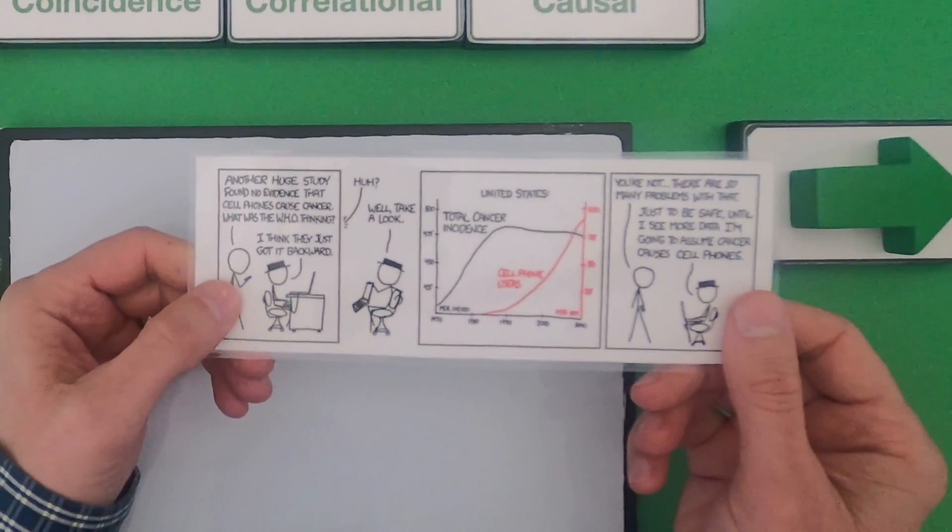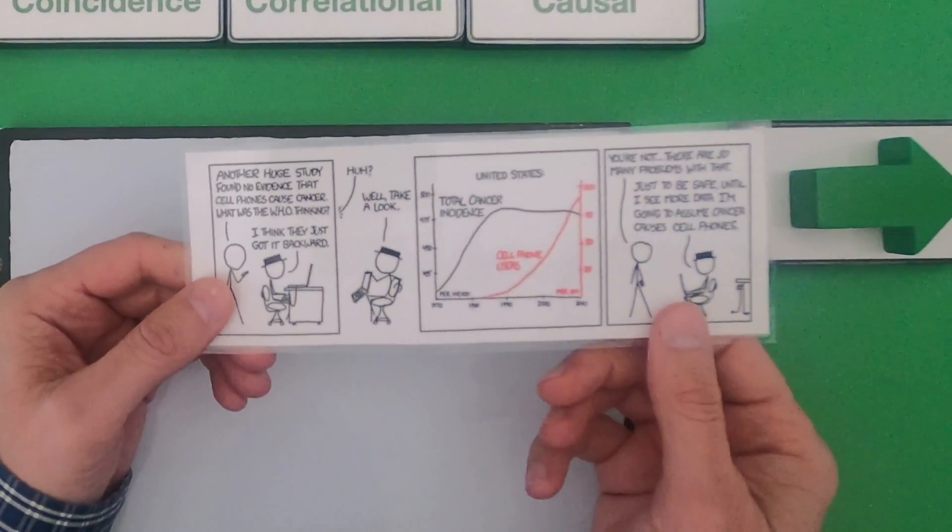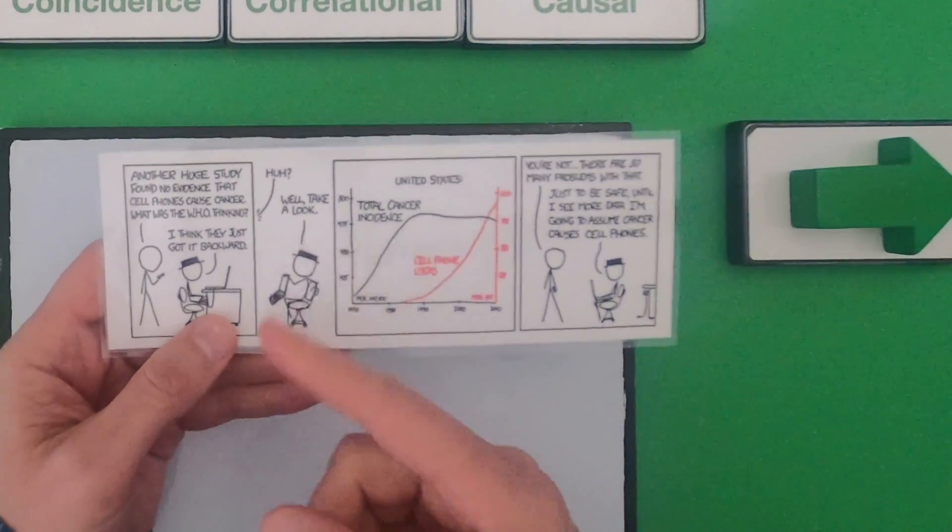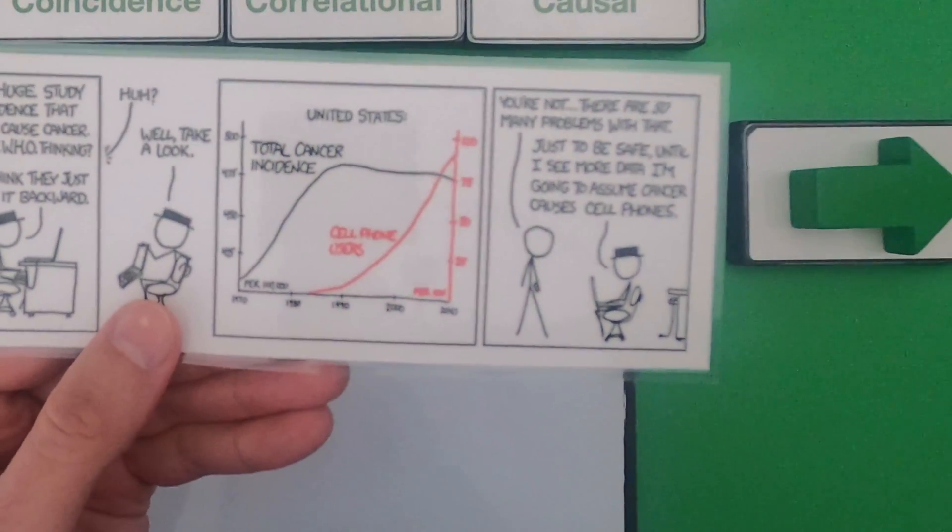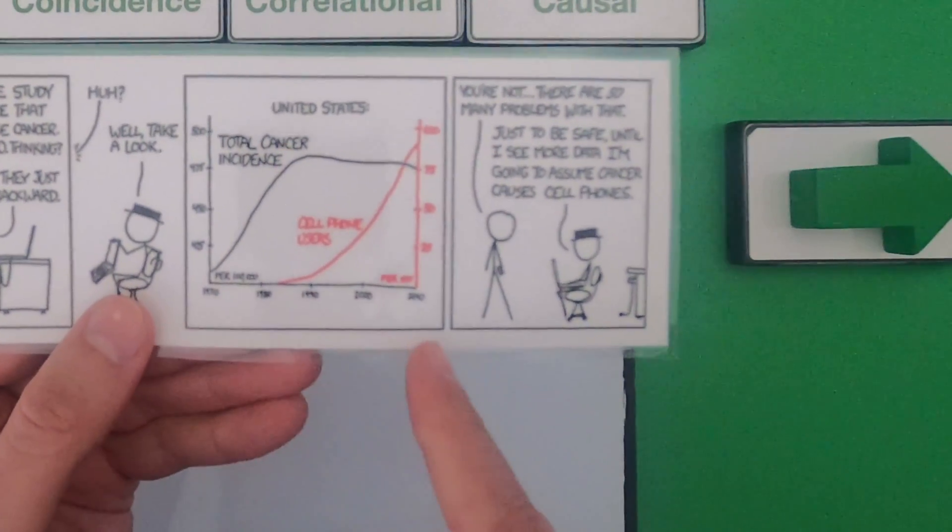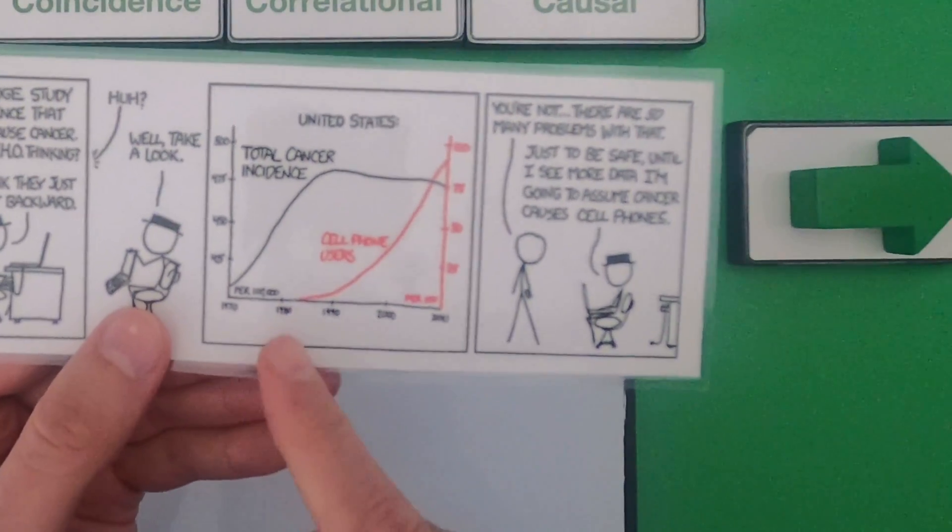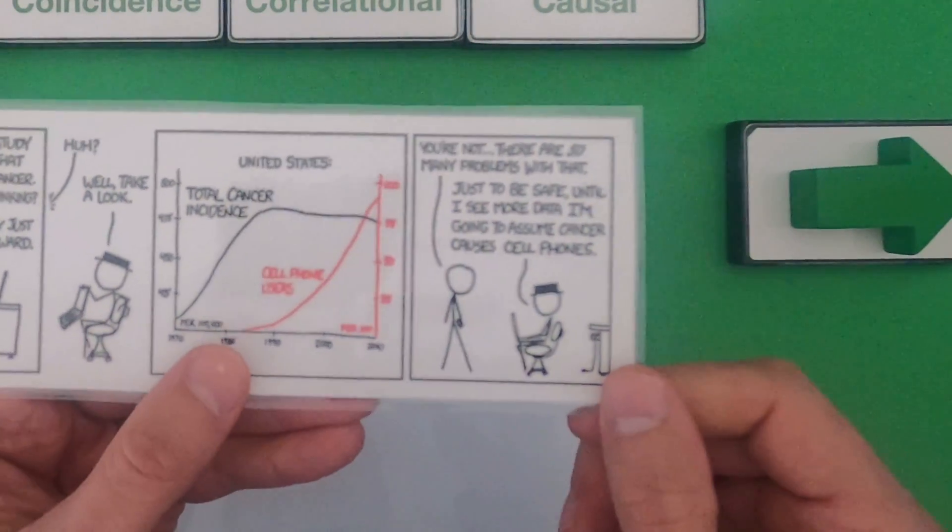Person in the black hat says, I think they got it backwards, huh? Well take a look. And then there's the data right here where you see an increase in total cancer incidence. This is from 1970 to 2010. And then an increase in cell phone users.